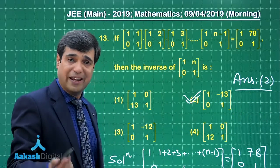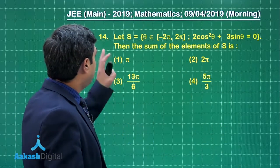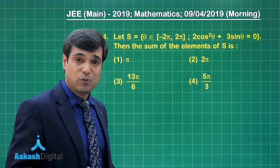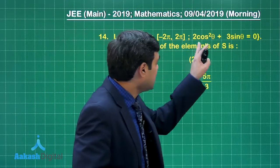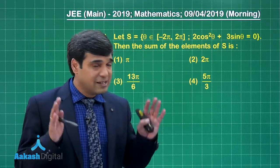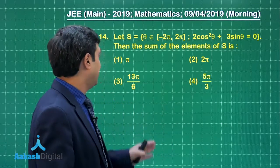Let's move on to the next one. Let S = {θ ∈ [-2π, 2π]: 2cos²θ + 3sinθ = 0}. Then the sum of elements of S is—a simple trigonometric equation.